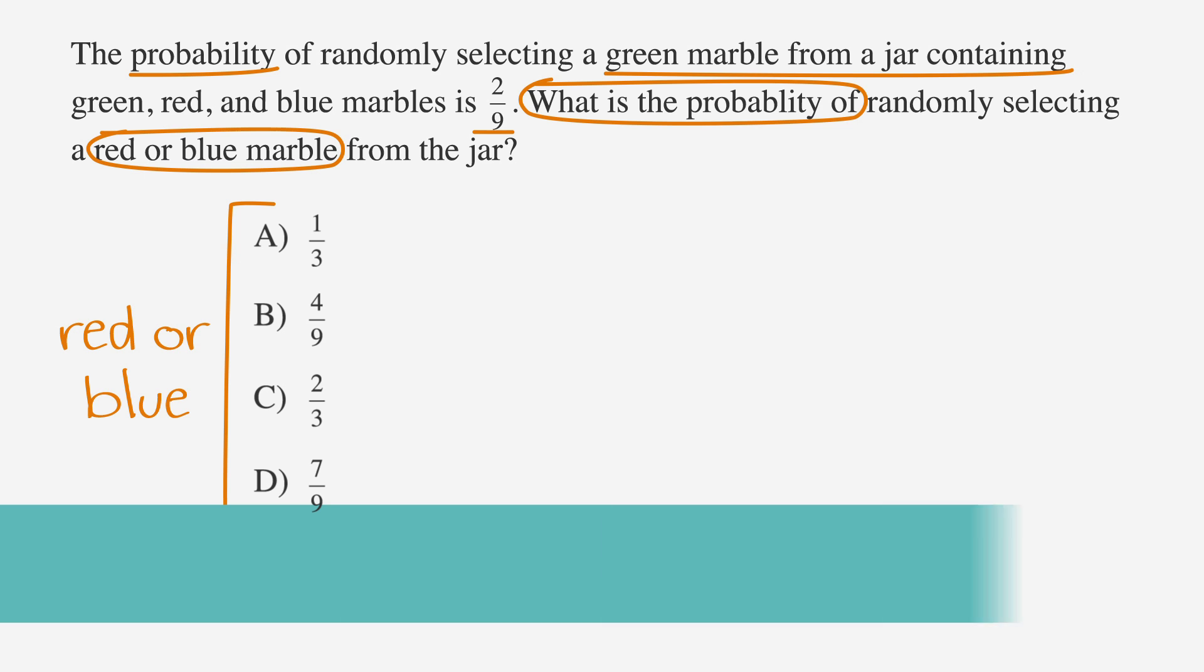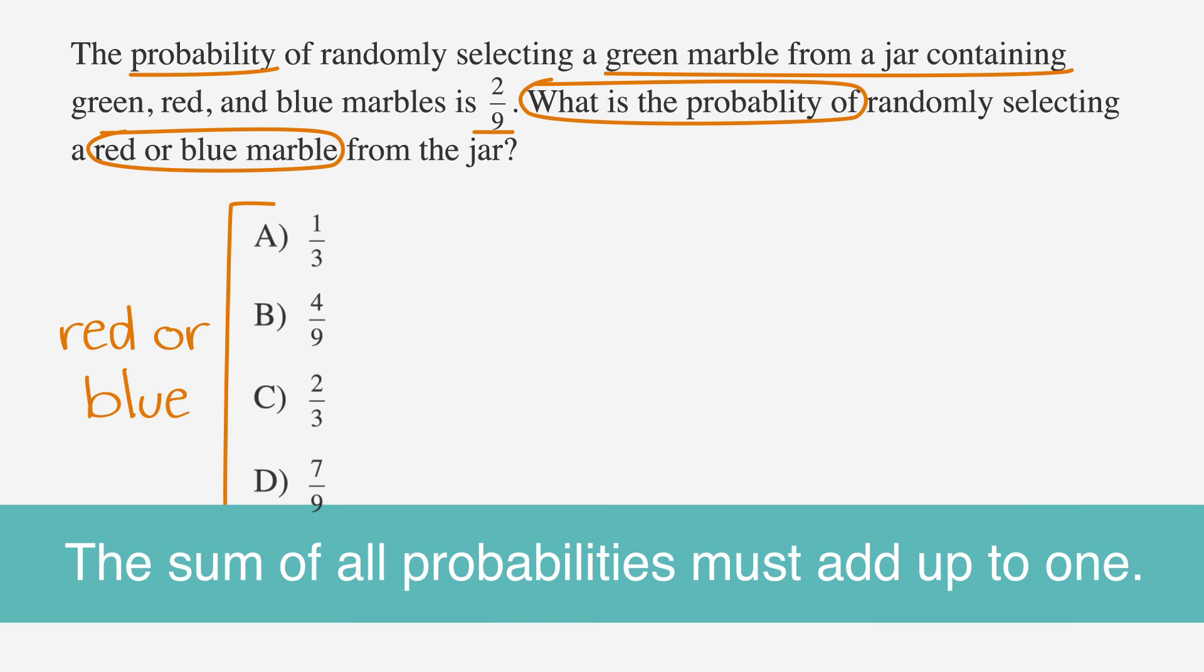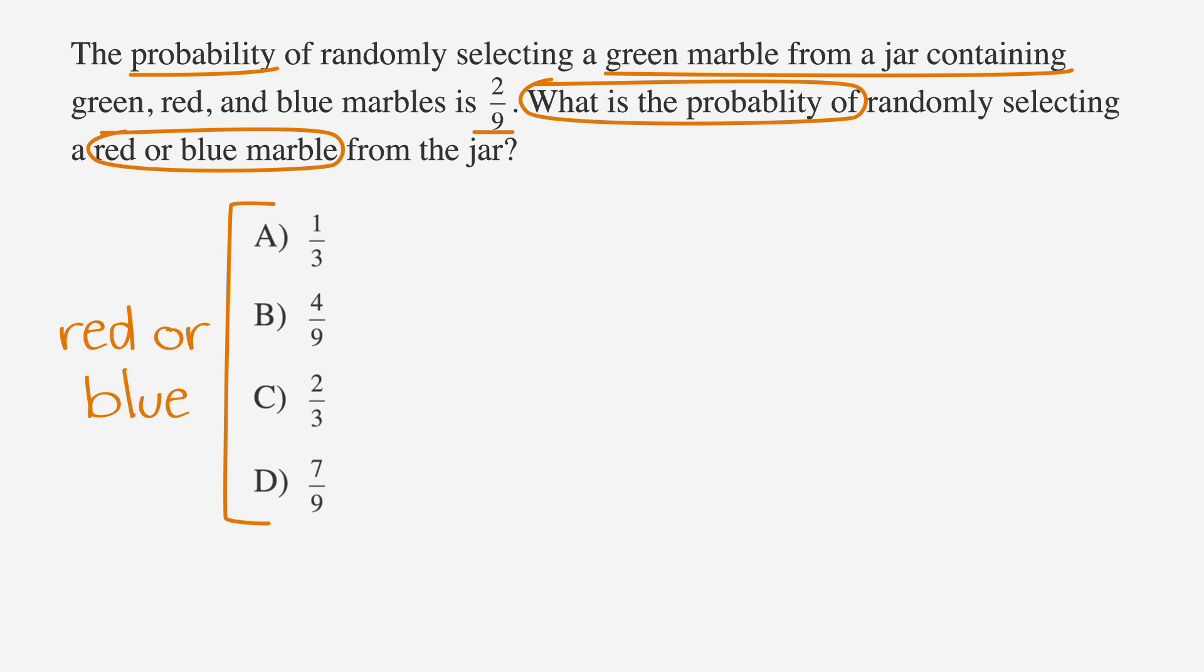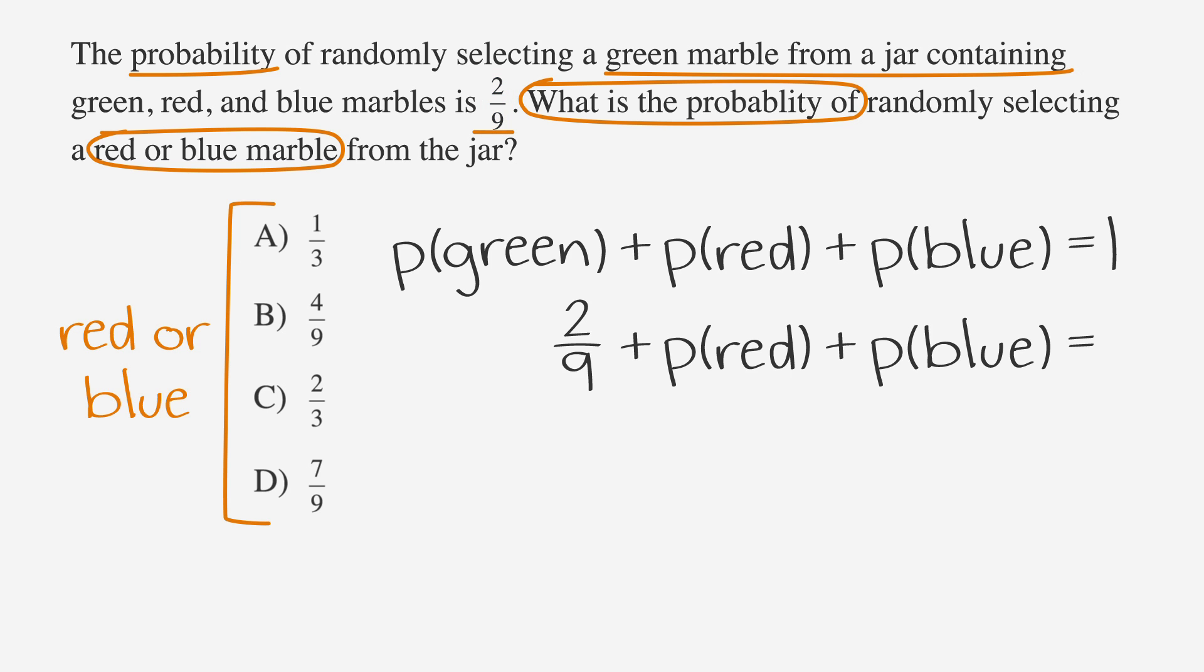As we know, the sum of all probabilities must add up to one. So we want to set the probability of choosing a green marble plus the probability of choosing a red marble plus the probability of choosing a blue marble equal to one. We're told that the probability of choosing a green marble is two-ninths. So our equation becomes two-ninths plus the probability of choosing a red marble plus the probability of choosing a blue marble equals one.